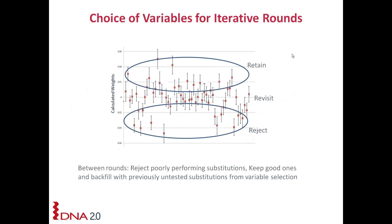Once we identify the good variables, we retain them. The poorly behaving, negative variables we toss out. Variables in the middle we may want to revisit at lower frequency. If we open up opportunities for additional variables, we go back and backfill from the initial variable list, continuing to add substitutions to the dataset.